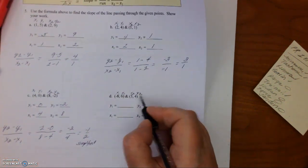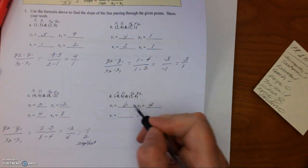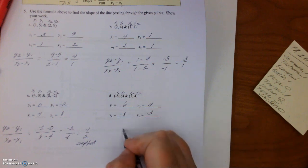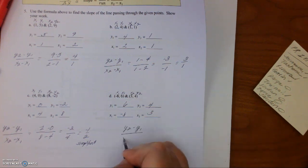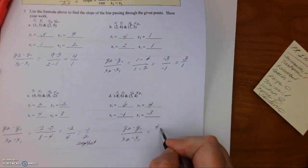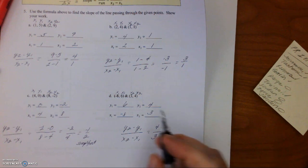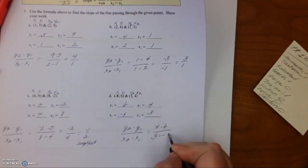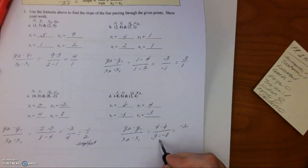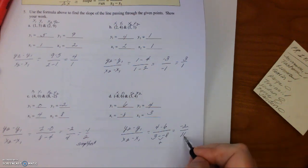Again, y2 is 4, y1 is 6, x1 is negative 8, x2 is 3. So we have (y2 minus y1) over (x2 minus x1) equals 4 minus 6. Then we have x2 is 3, and then minus negative 8. You're going to end up with two negative signs. So 4 minus 6 is negative 2. When you have two negative signs together, it becomes a positive. So 3 plus 8 is 11. So it's negative 2 over 11.